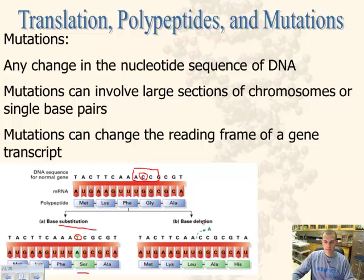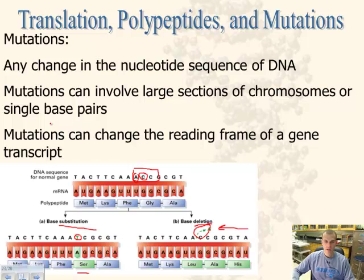The second type is an insertion or a deletion. In this example we're looking at a deletion — this A here is being removed, and what happens is it causes a frame shift, moving the letters over. You can then see that on the bottom, we have three different amino acids coded for instead of just that one. This will change the protein and obviously change whatever job it's supposed to be doing.